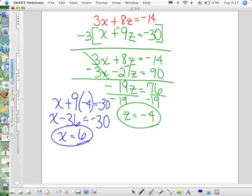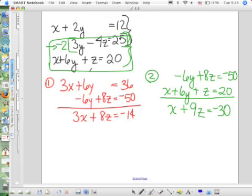So, if x is 6 and z is negative 4, I can just come back right here and just plug x in and figure out what y is, right?